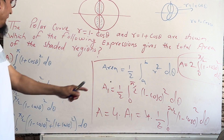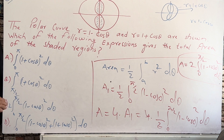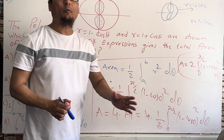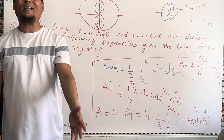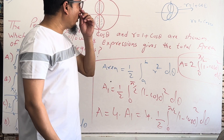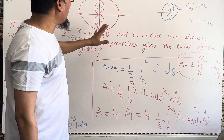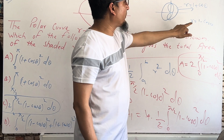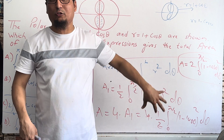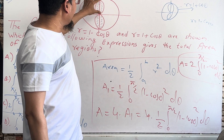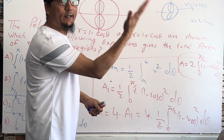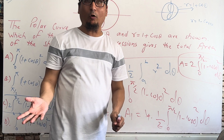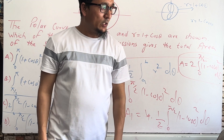The answer matches option C. So the answer to this question is C. If you have any problems, just write a comment and we can discuss it. One more thing: this is a polar equation of the limacon type. I'm not going to explain it in depth here — just find the first part from 0 to π/2, use symmetry, multiply by 4, and you can easily find the total area.